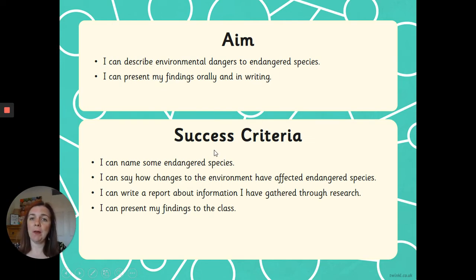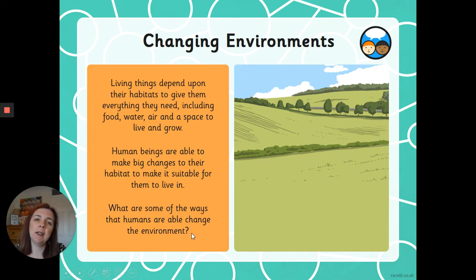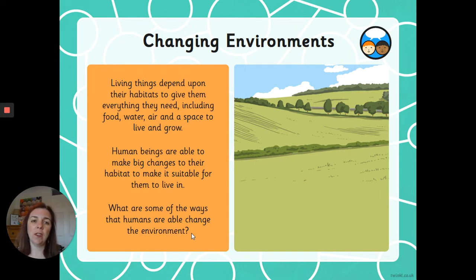There's a separate video telling you all about that. Changing environments: living things depend upon their habitats to give them everything they need, including water, food, air, and a space to live and grow. Human beings are able to make big changes to their habitat to make it suitable for them. Think about some of the things that humans have done to the earth to make it really good for us to live there — but what might that mean for some animals?